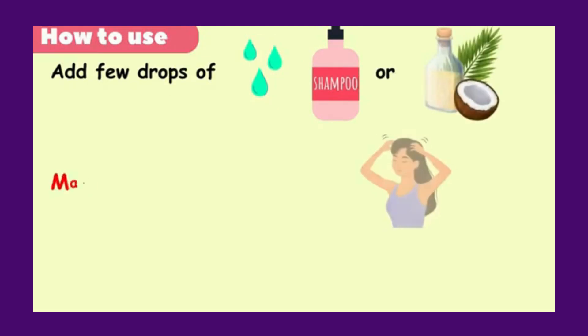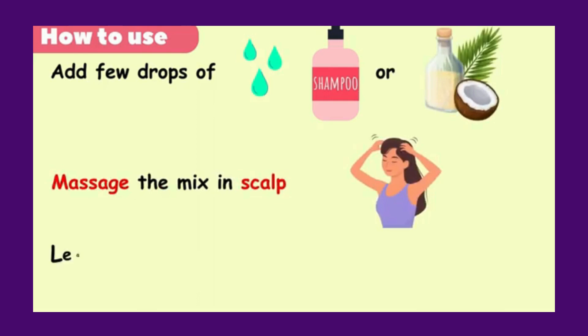For maximum benefits, add a few drops of tea tree oil to your regular shampoo, or mix it with a carrier oil like coconut oil. Massage the mixture into your scalp, leave it on for a few minutes, then rinse thoroughly.